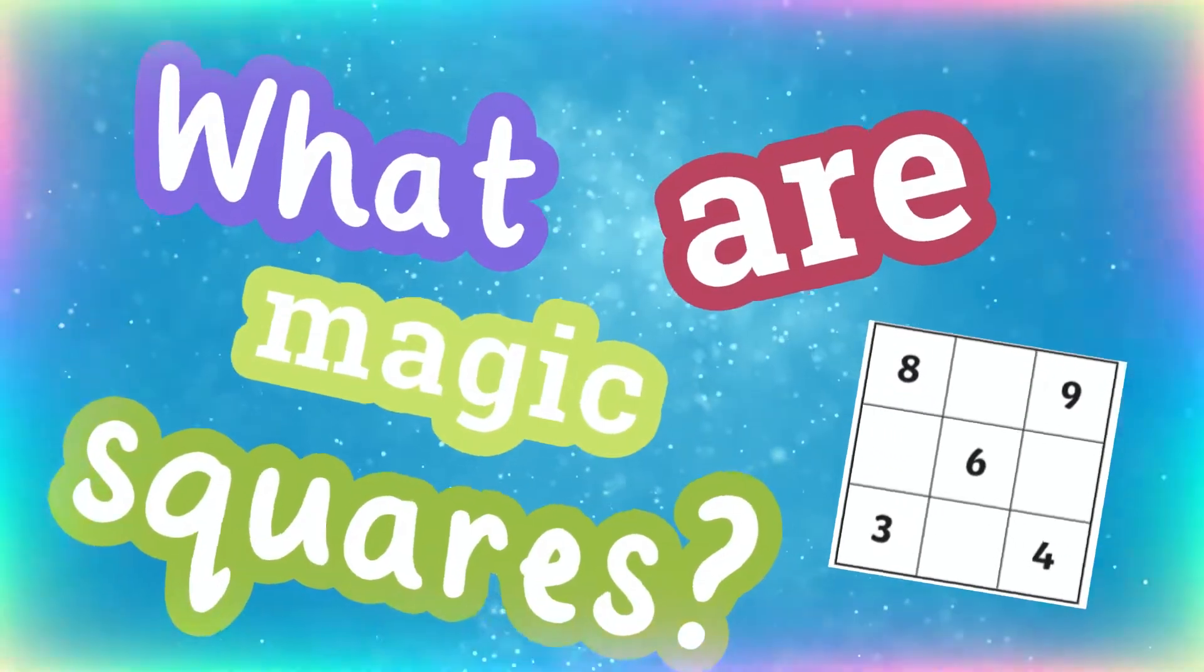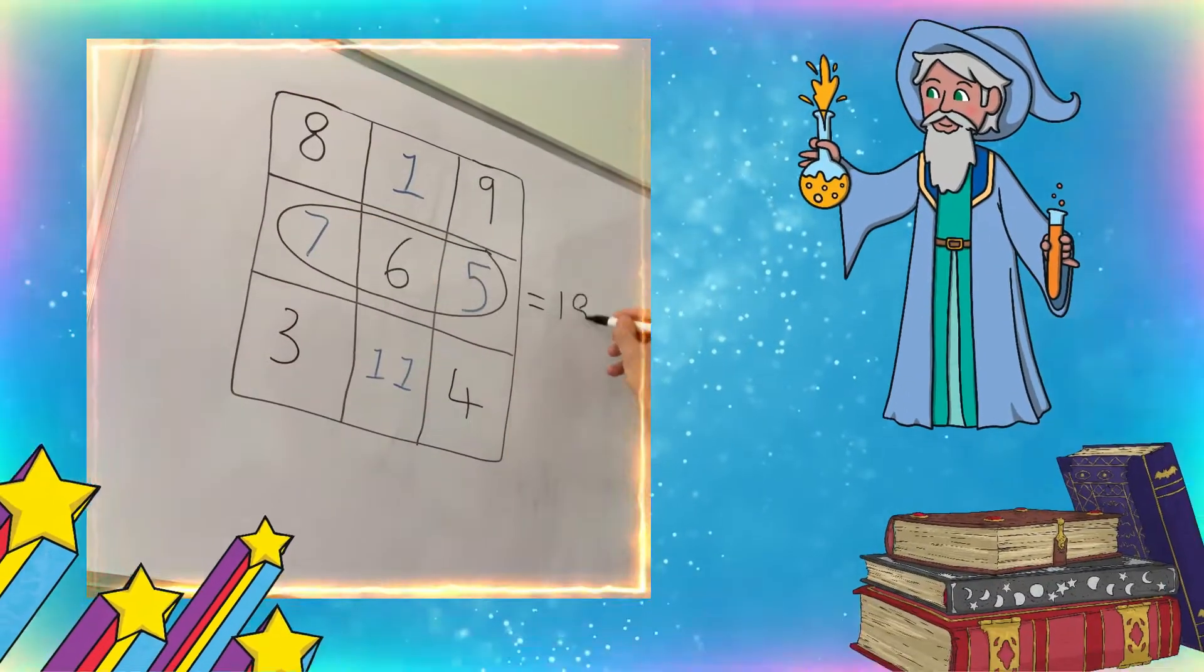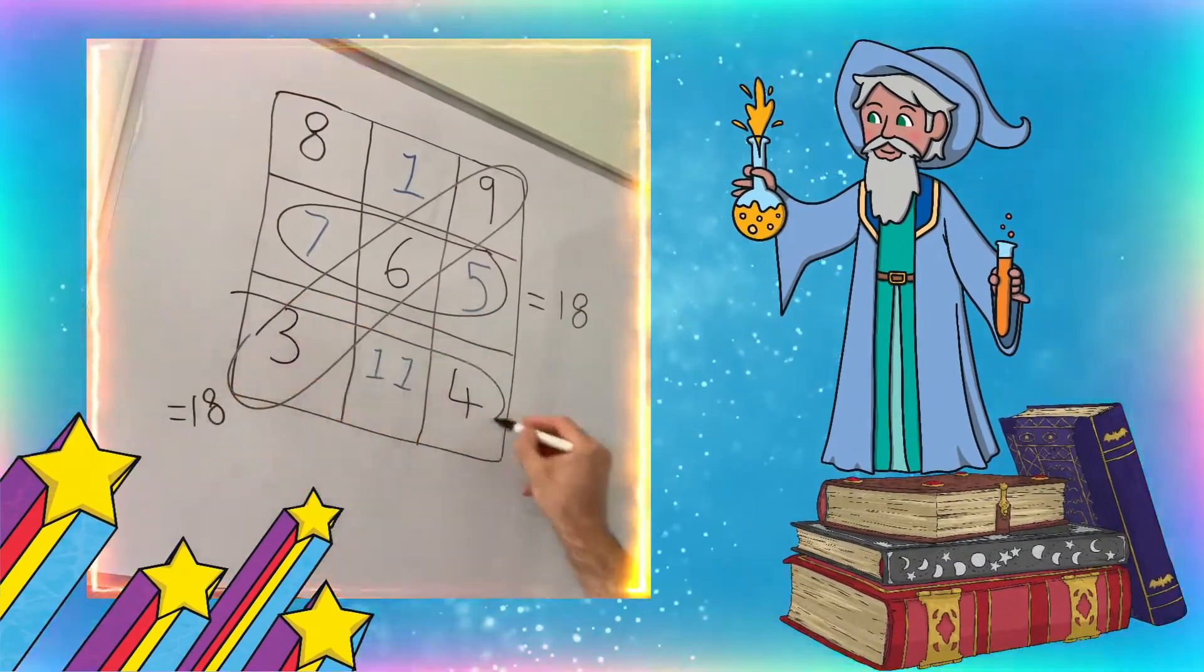What are magic squares? These grids are filled with numbers in such a way that each row, each column, and two diagonals add up to the same number.